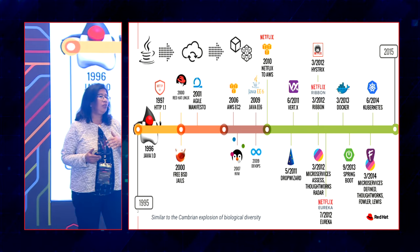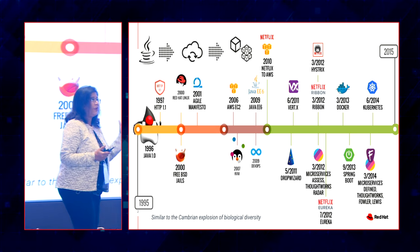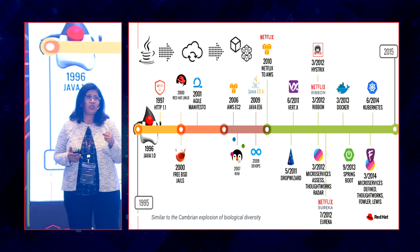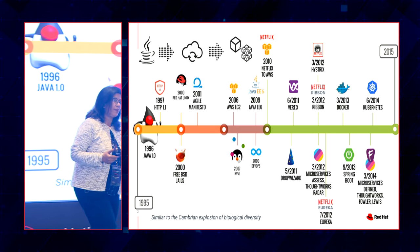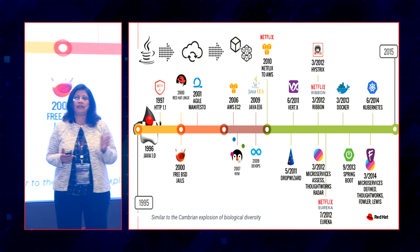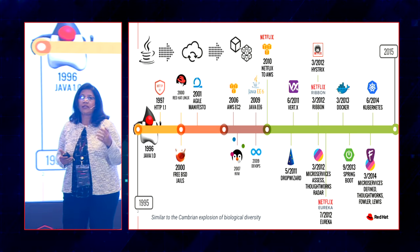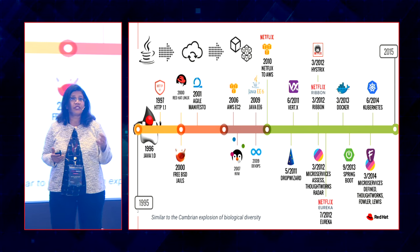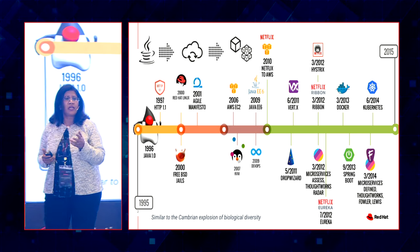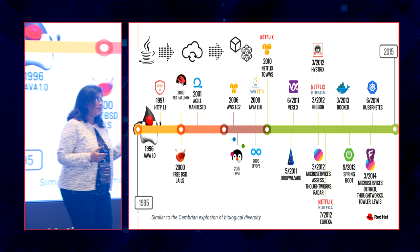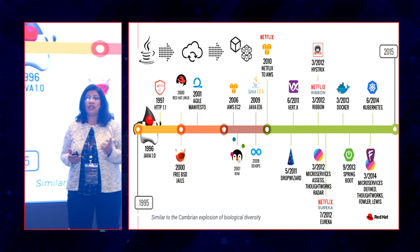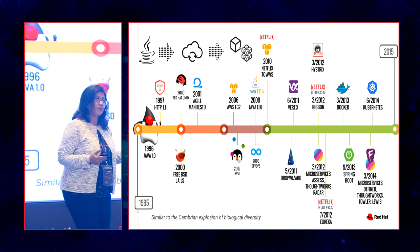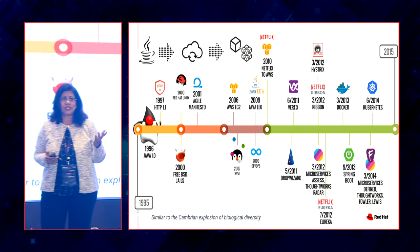We see there has been a polarization of languages, frameworks, and different kinds of things came up. You can call it architecture patterns, the evolution from monolith to microservices — any number of things. And finally, today we stand in a day where containers and Kubernetes are the buzzwords, and digital transformation is the talk of everyone.